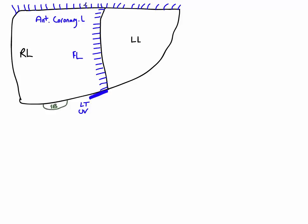Both the coronary ligament and the falciform ligament help to suspend the liver within the abdomen. There are thickenings of the coronary ligament layers at both the right and left extremes. These are known as the left triangular ligament and the right triangular ligament, which help reinforce and hold the liver to the underside of the diaphragm.